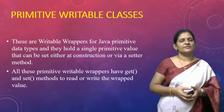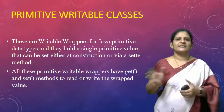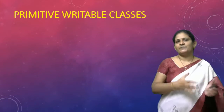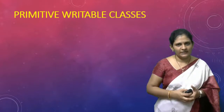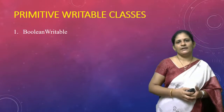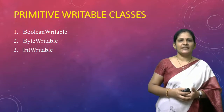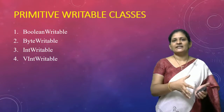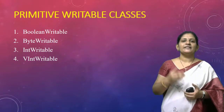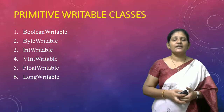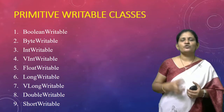Now we will see the primary primitive writable classes supported by Hadoop. For each Java primitive data type there is a corresponding writable class. For boolean there is BooleanWritable, for byte there is ByteWritable, for int there is IntWritable. Hadoop also supports VIntWritable — a variable-length integer writable class. For float there is FloatWritable, for long there is LongWritable, for variable-length long there is VLongWritable, for double there is DoubleWritable, and finally ShortWritable.